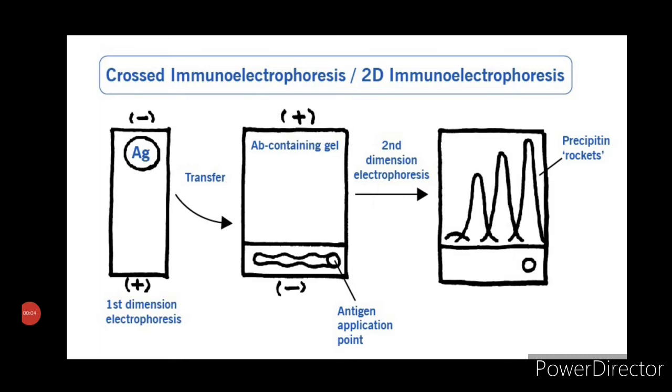Crossed immunoelectrophoresis, which is also called two-dimensional immunoelectrophoresis. In crossed immunoelectrophoresis, proteins are first separated by agar gel electrophoresis,